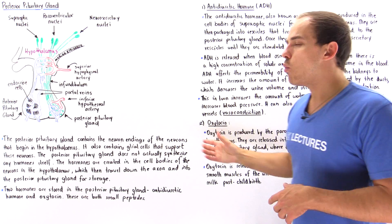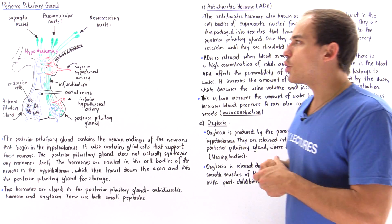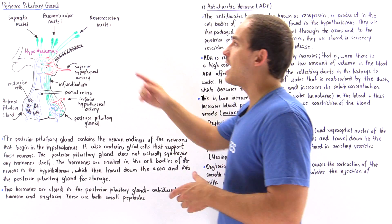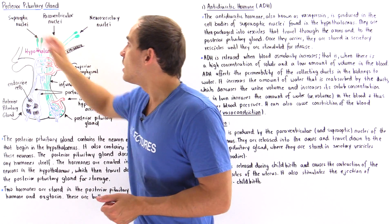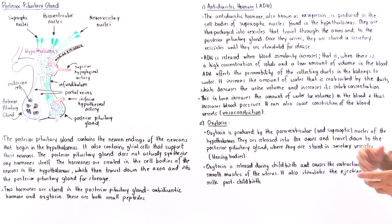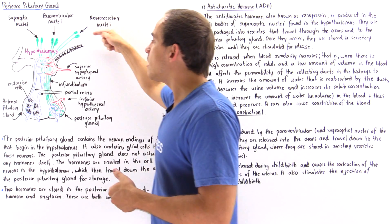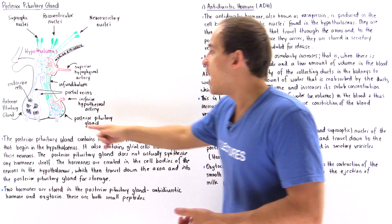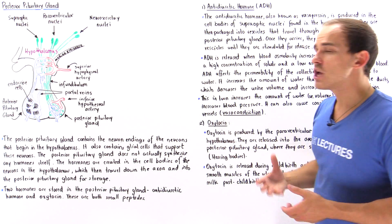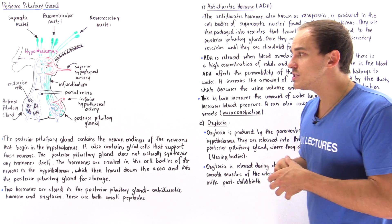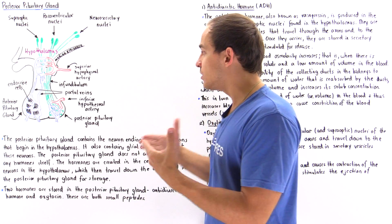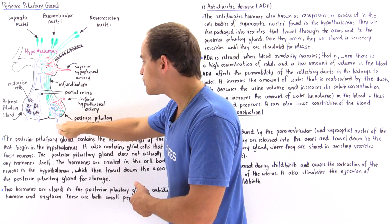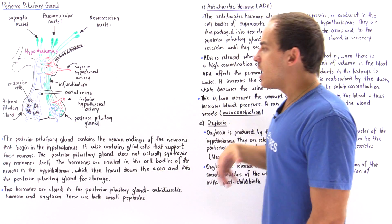Now, what about oxytocin? Oxytocin is also produced in the cell bodies of neurons — specifically in the paraventricular nuclei and the supra-optic nuclei. Once produced, oxytocin travels down the axon in secretory vesicles and, just like ADH, is stored in special vesicles on the axon terminals known as herring bodies. When stimulation occurs, oxytocin is released into the capillary network and exits through the hypophyseal vein.